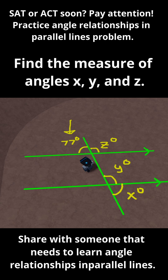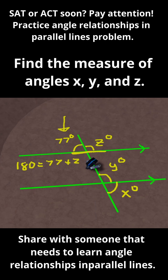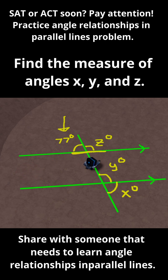First, I'm going to note that angles z and 77 are along a straight line. Therefore, they're supplementary angles that add up to 180. So I can set up that 180 is equal to 77 plus z. Then I can subtract 77 from both sides, and I get that z is equal to 103 degrees.